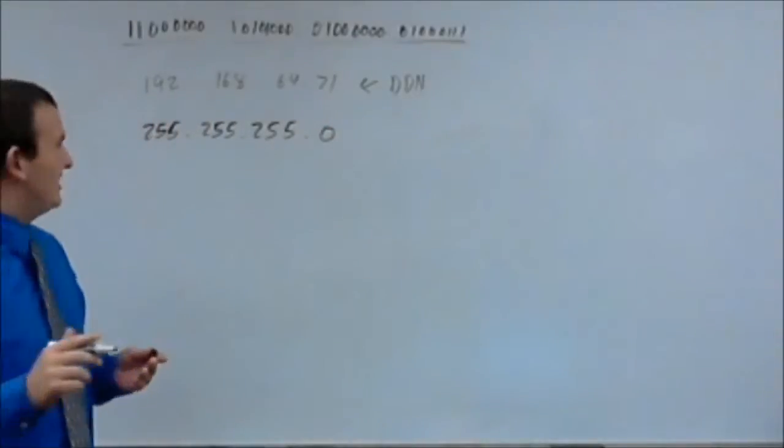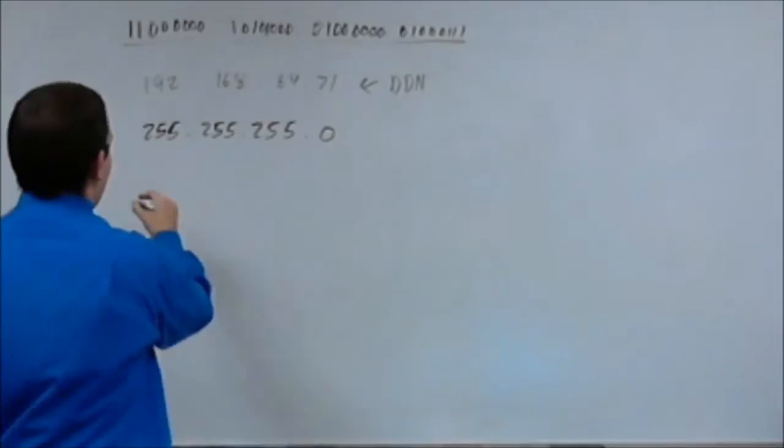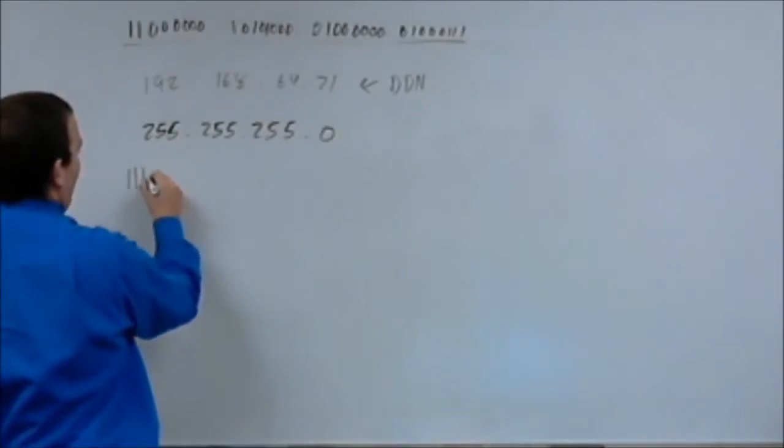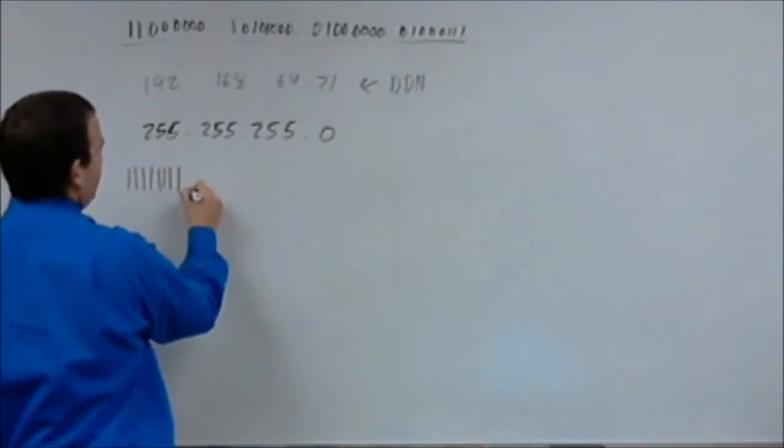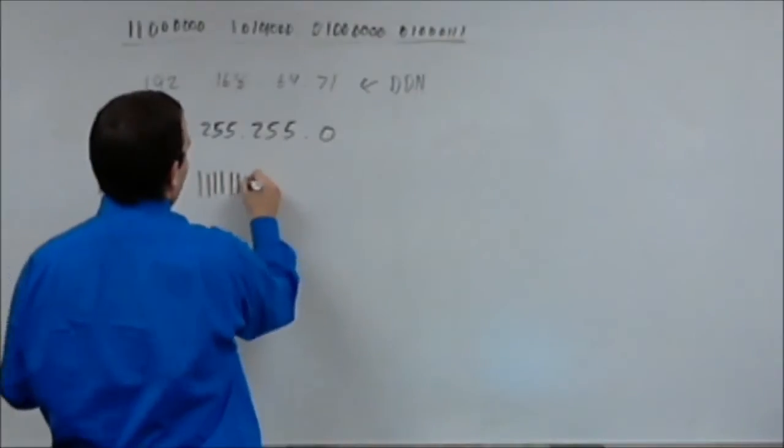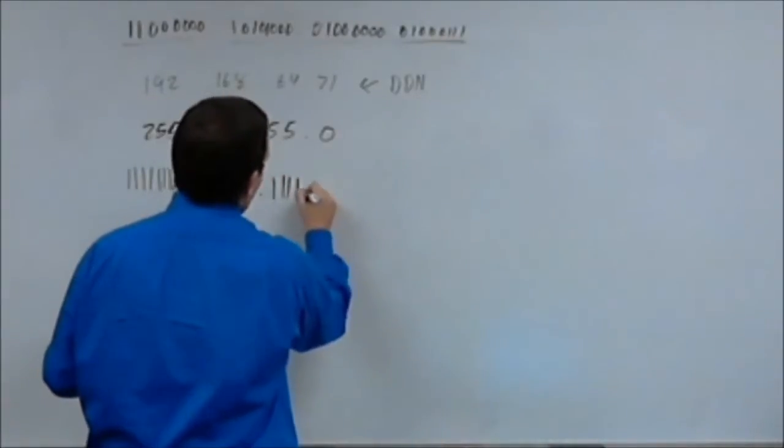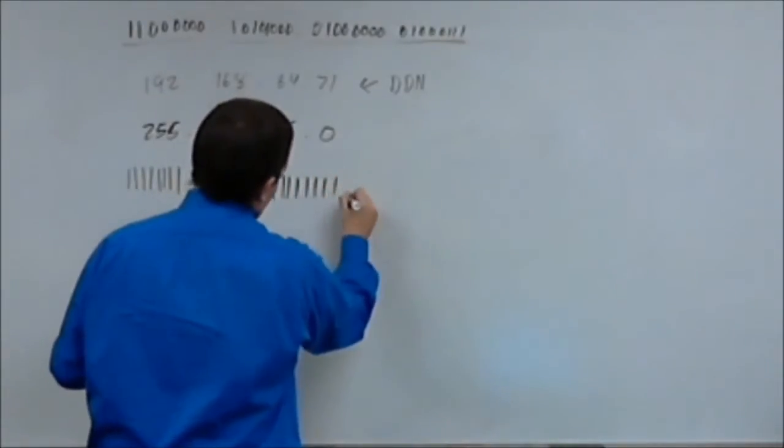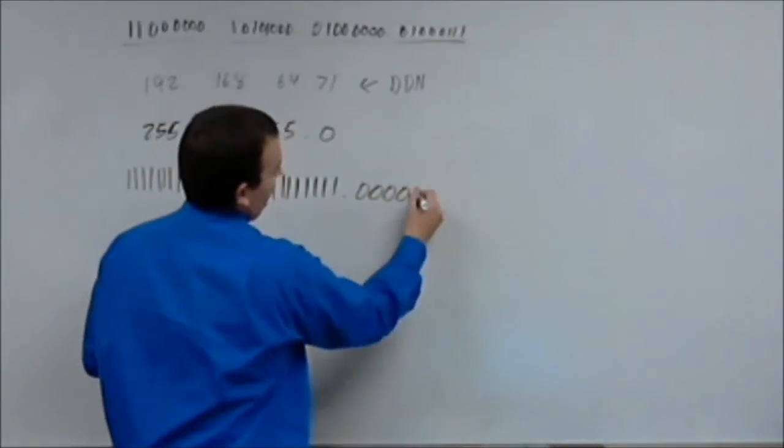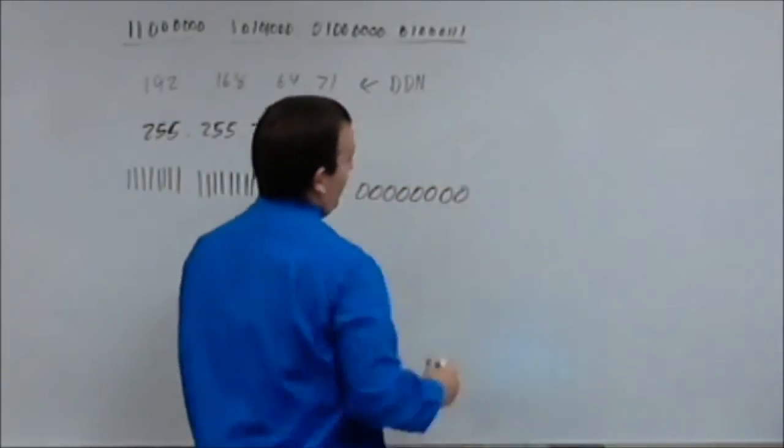Now, what that means is that when you break your subnet mask down, it's going to look like this. So, it is 11111111.11111111.11111111.00000000.